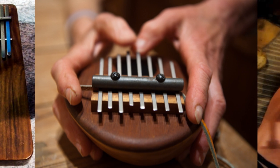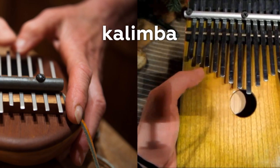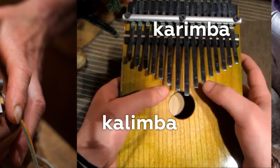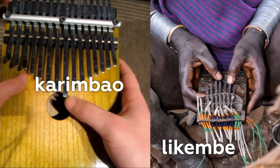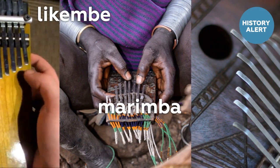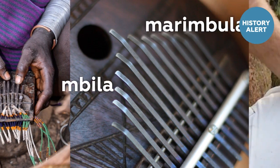The kalimba is what's called a lamellophone, which is a group of instruments that uses small tines which are plucked to create sound, often attached to a resonant chamber of sorts. The kalimba is a bit of a tricky thing to pin down, as similar instruments have been made for at least a few thousand years, and vary not only in shape and material, but also in name.